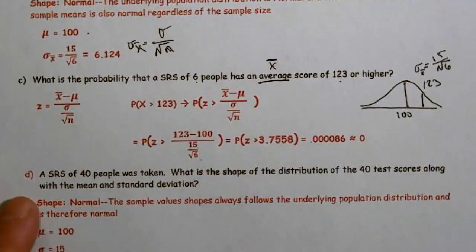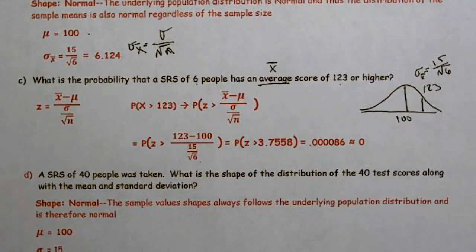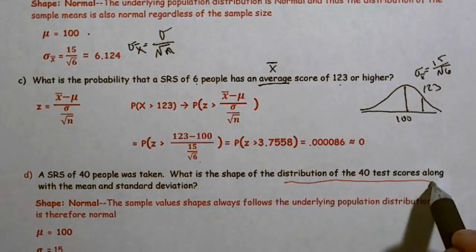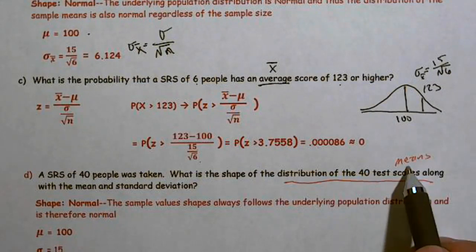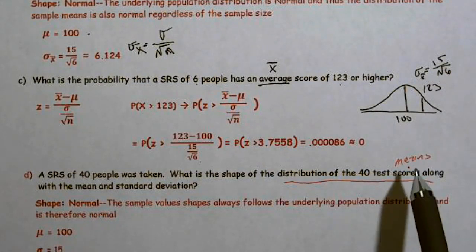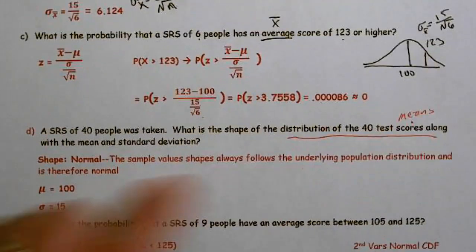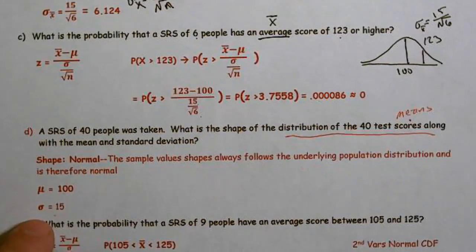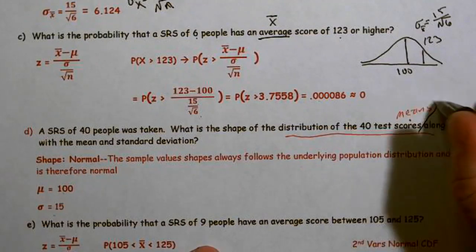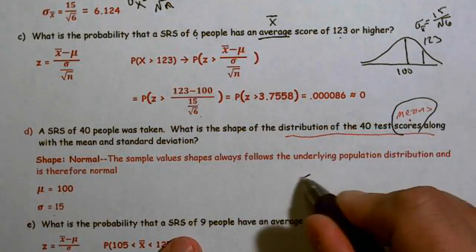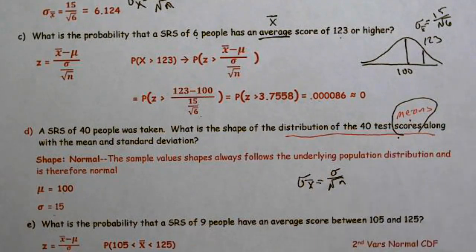Part D: a simple random sample of 40 was taken. What is the shape of the distribution of the 40 test scores, along with the mean and standard deviation? Tricky question — be careful. This is asking about the distribution of test scores, not the distribution of means. The scores follow the underlying distribution, which is normal, with mean 100 and standard deviation still 15. You only divide by √n when talking about the distribution of means, not individual values.